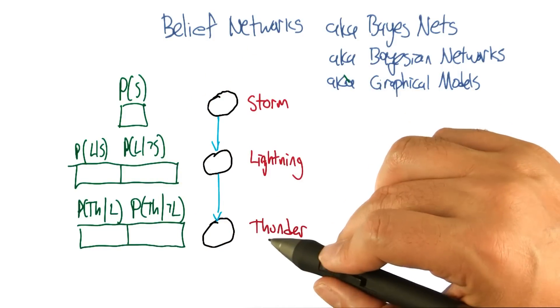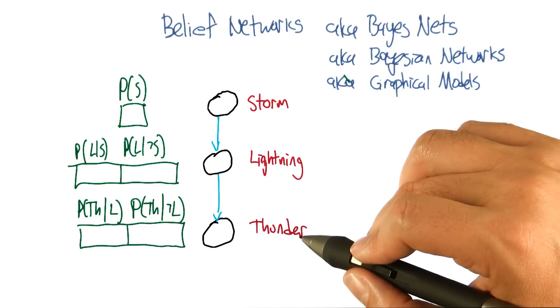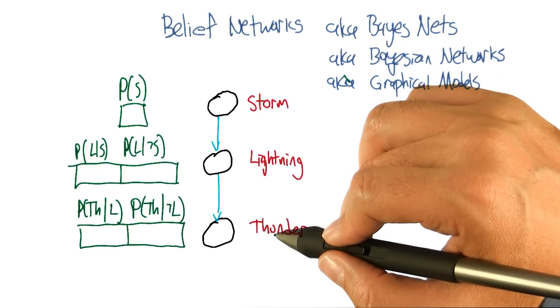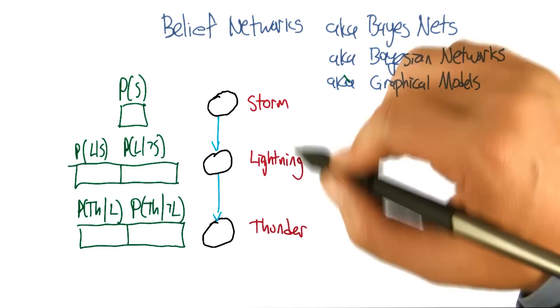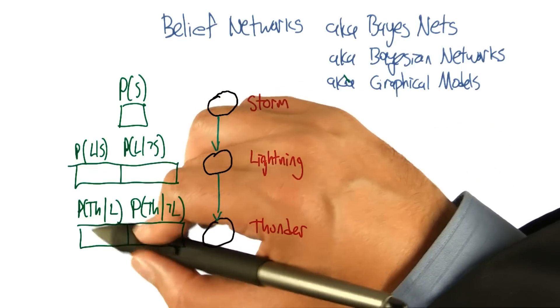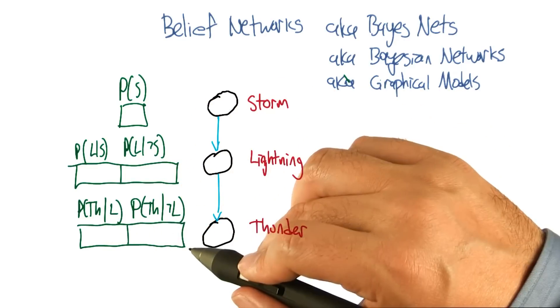Finally, the probability of thunder—normally you'd have to condition that on both storm and lightning. But as we already talked about, it's actually conditionally independent of storm given lightning. So all we need to figure out is the probability of thunder given lightning and the probability of thunder given not lightning.